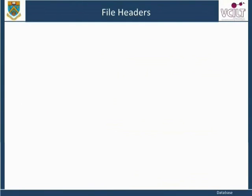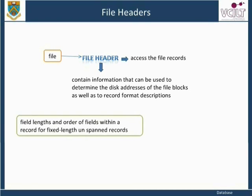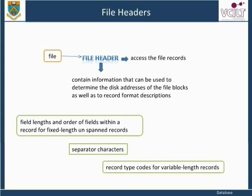A file normally contains a file header, or file descriptor, providing information needed by programs that access the file records. The contents of a header contain information that can be used to determine the disk addresses of the file blocks, as well as record format descriptions, which may include field lengths and order of fields within a record for fixed length and spanned records, separator characters, and record type codes for variable length records.